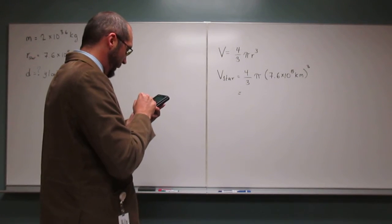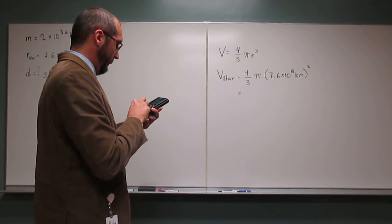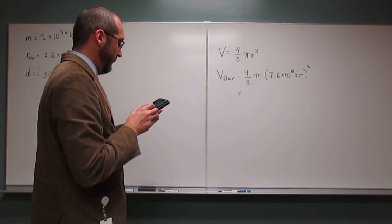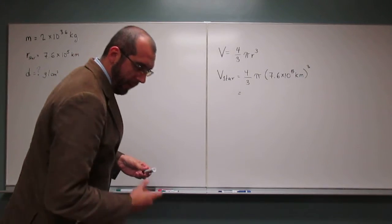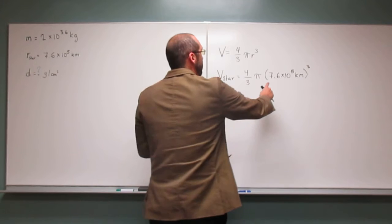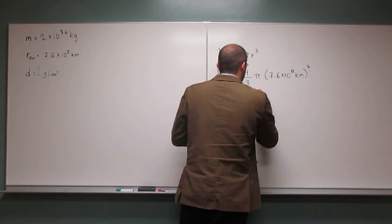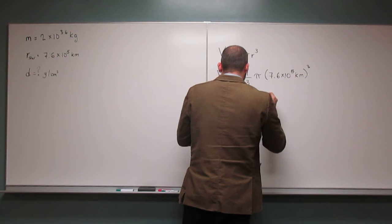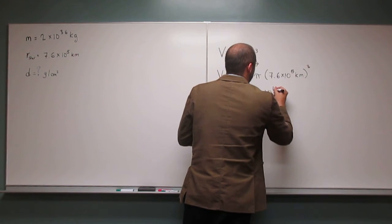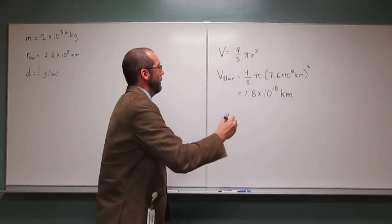5 cubed times pi times 4 divided by 3. And if hopefully you get the same number as I do, to two significant figures, it's going to be 1.8 times 10 to the 18th kilometers cubed.